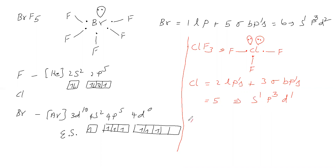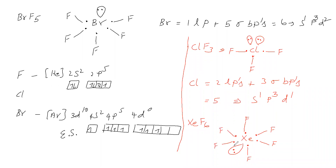Next we will take XeF₆. In XeF₆, the central atom is xenon. The valency shell is having eight electrons. Each fluorine atom is making one bond with xenon. Xenon is having one lone pair and six sigma bond pairs — totally seven. Writing SPD: one to S, three to P, remaining three to D. So the hybridization of xenon in XeF₆ is sp³d³.